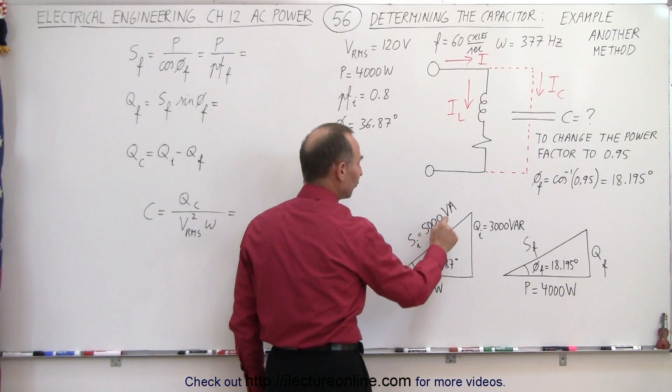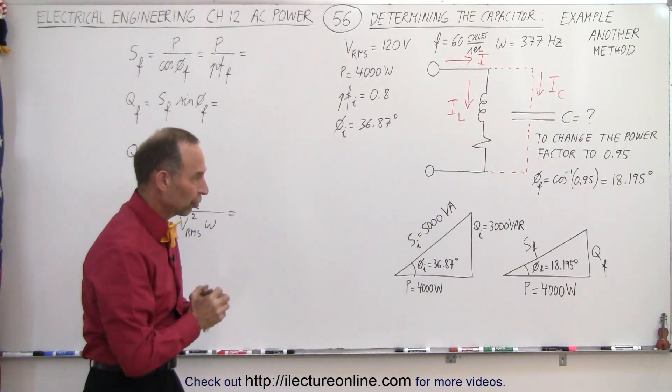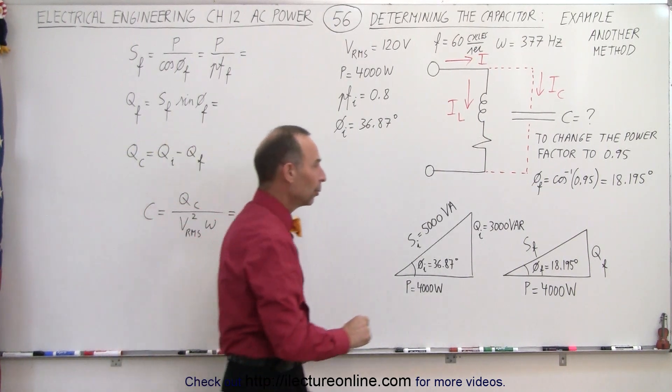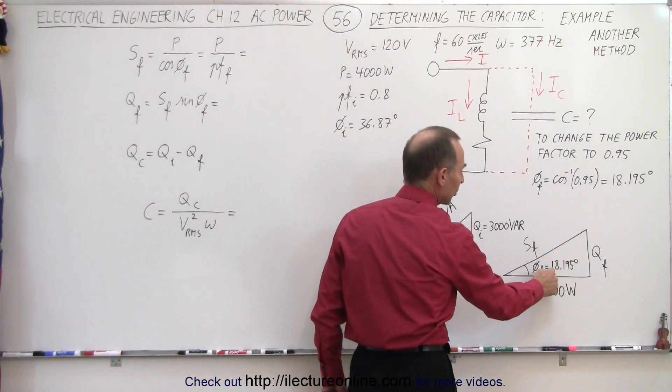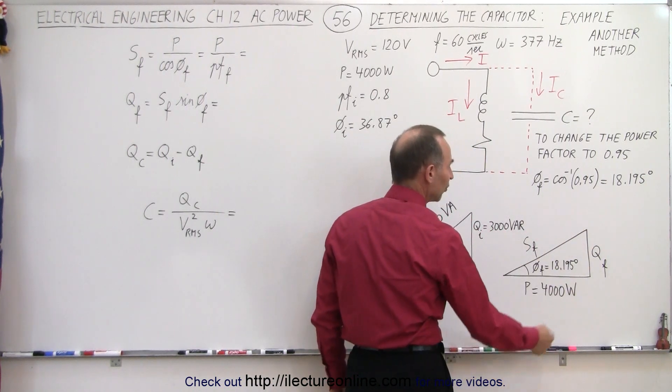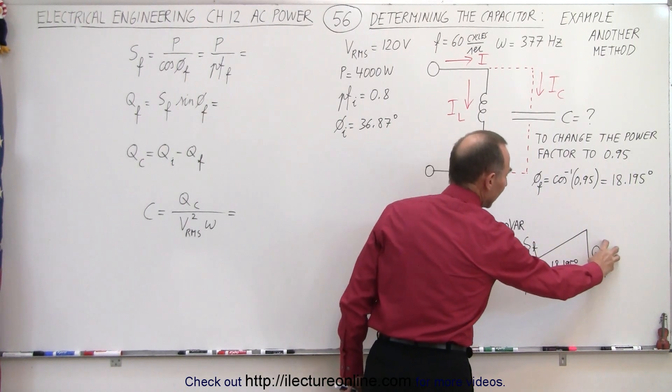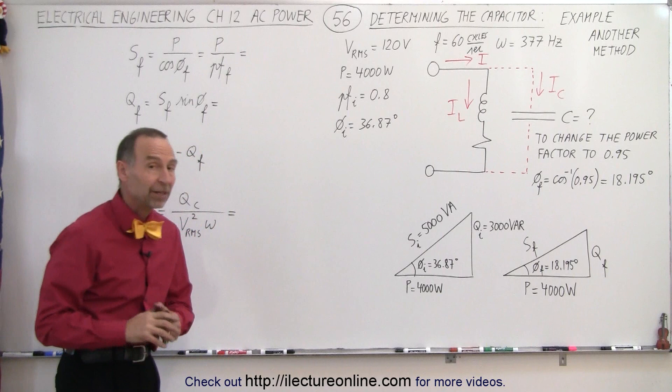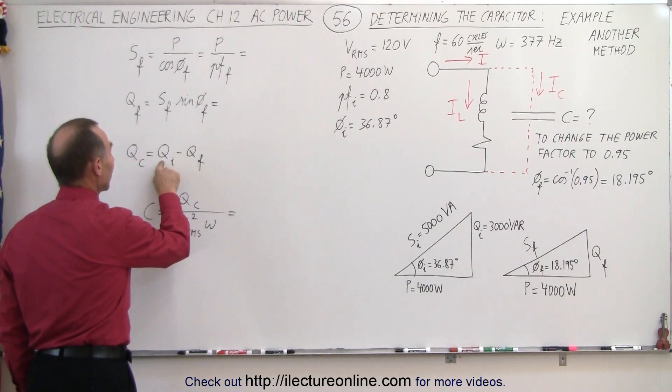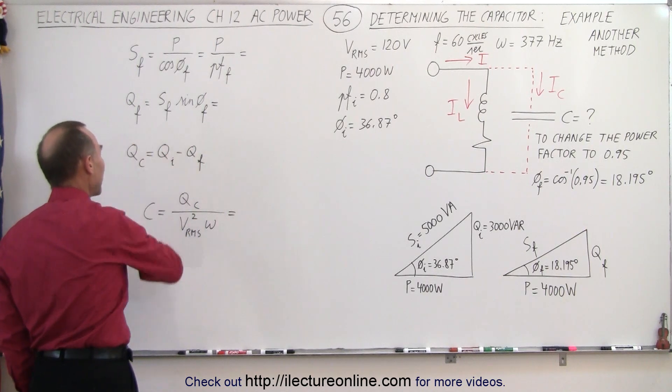And we have a 5000 volt ampere complex power requirement in our initial circuit. We now add the capacitor in parallel. We then reduce the phase angle to 18.195 degrees for a new power factor of 0.95. So now we're going to calculate the new complex power and the new reactive power, because when we do that, we can find the difference between the initial reactive power and the final reactive power, which gives us the reactive power of the capacitor.